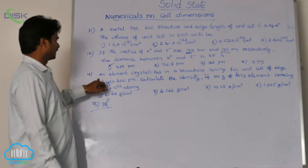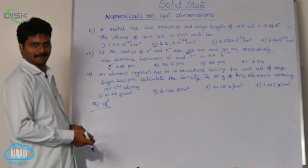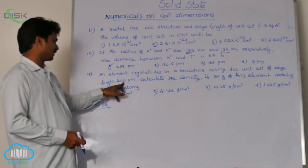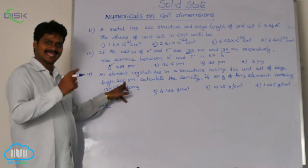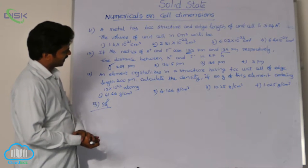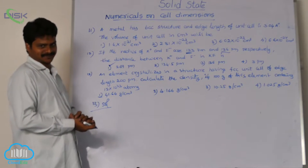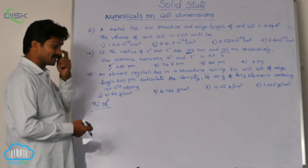13th question. Here an element is crystallizing in a structure having FCC unit cell of edge length 200 picometers. So A is given edge length. Calculate the density if 100 grams of this element contains 12 into 10 power 23 atoms. So here asking for density.